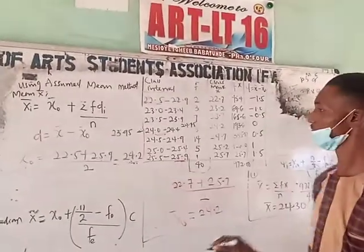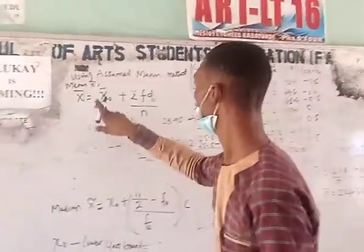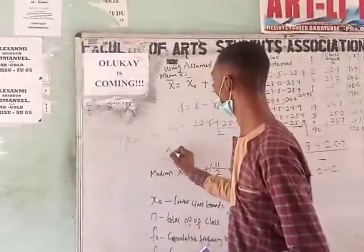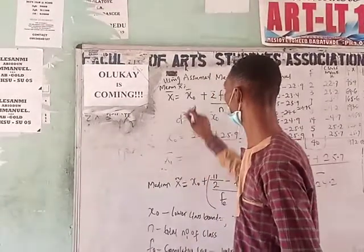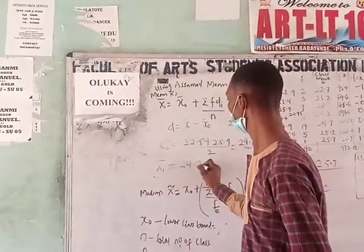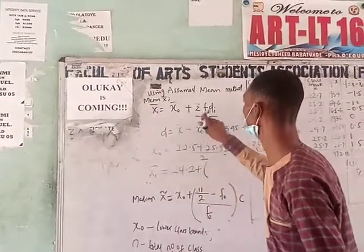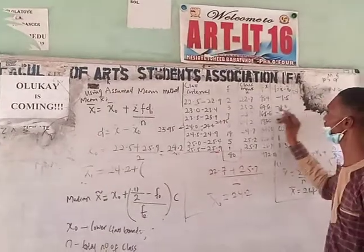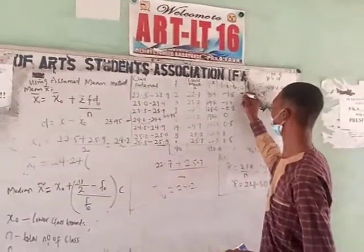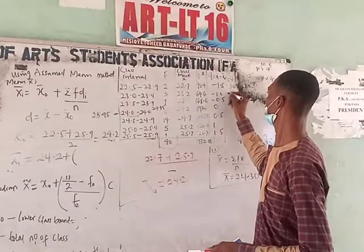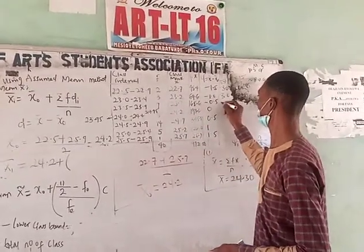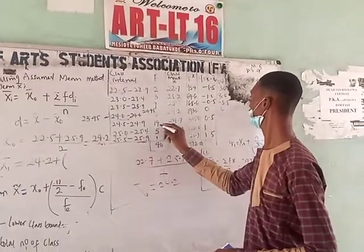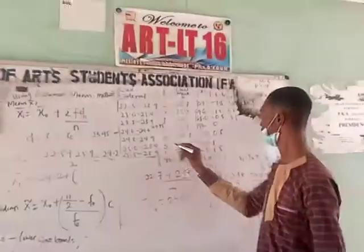So since you've got the deviation values, now you can find your FD. Your assumed mean formula uses the summation of FD. So I need to multiply frequency by deviation. I have my answers as minus 3, minus 3.5, zero. The values are different — you understand? So we have to multiply this.